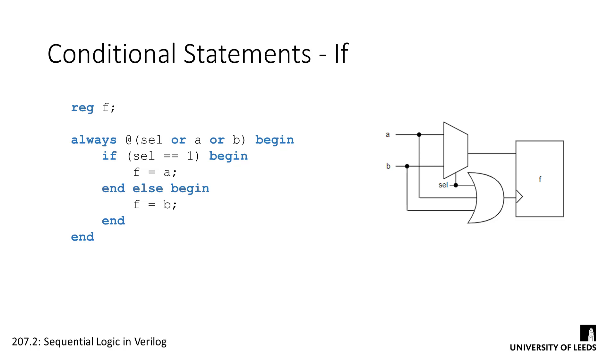The two conditional statements that are available to us are if and case. The if statement in Verilog acts exactly like it does in other programming languages. We specify some conditions and what should happen if they're evaluated as true or false. In always blocks, if statements will re-evaluate every time the block is triggered. Should we want to, we can further extend an if statement with chains of if, else if, and so on and so forth.